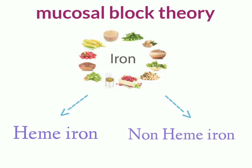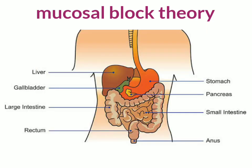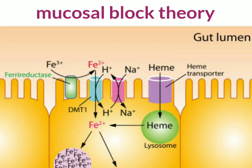Most of our absorption in the alimentary canal takes place in the small intestine region, consisting of the lumen, goblet cells, and enterocytes like the mucosal cells. When food reaches the small intestine, the non-heme iron exists in the form of Fe3+ ions, but these ions cannot be absorbed by the enterocytes.